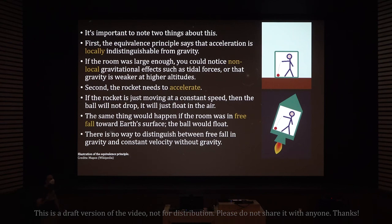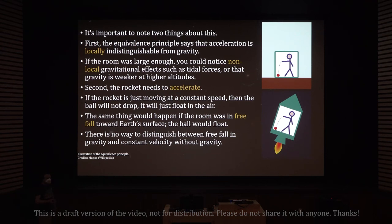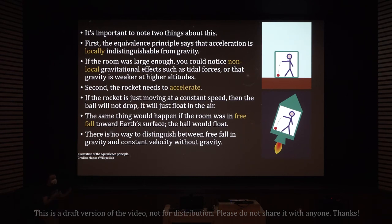The second important point is that the rocket needs to accelerate. If the rocket is just moving at constant speed, the ball will not drop — it will just float in the air. The same thing would happen if the room was in freefall toward Earth's surface — the ball would just float. So there's no way to distinguish between freefall in gravity and constant velocity without gravity.